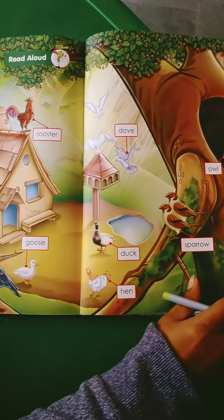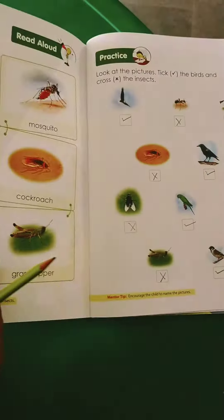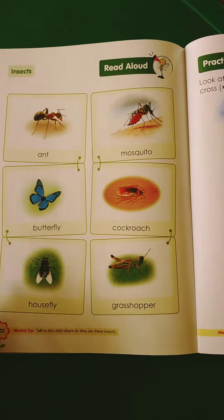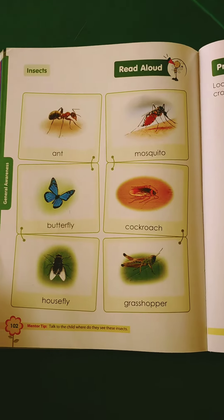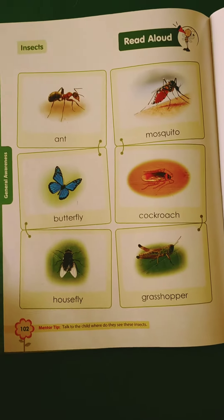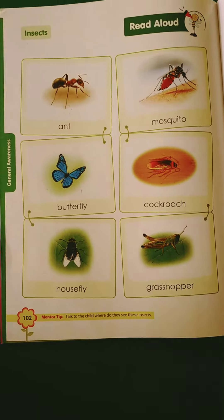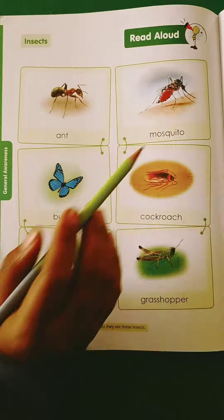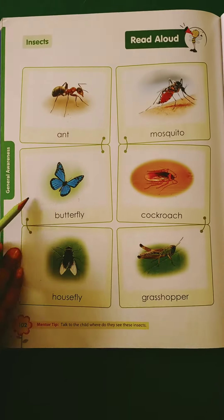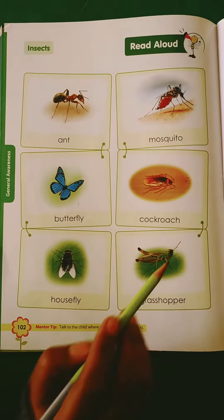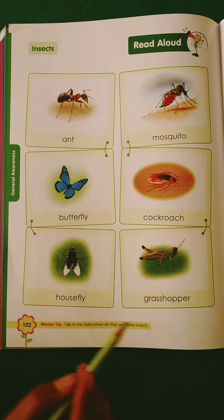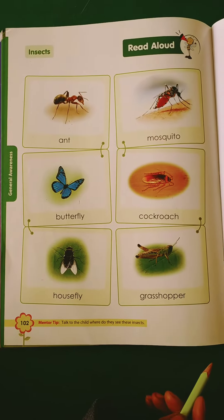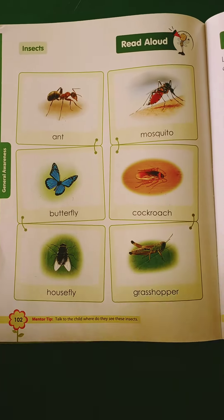Okay children, now insects — you have to learn 5 names of insects. Ant, mosquito, butterfly, cockroach, housefly and grasshopper.